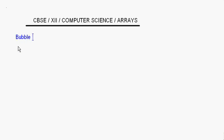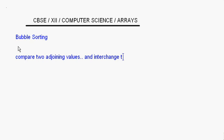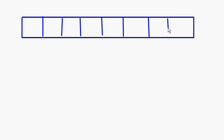Let's do bubble sorting in arrays today. In bubble sorting we have to compare two adjoining values and interchange them if there is a need. Now I'll show a small array and how the comparisons are made, then we'll write the program for this.